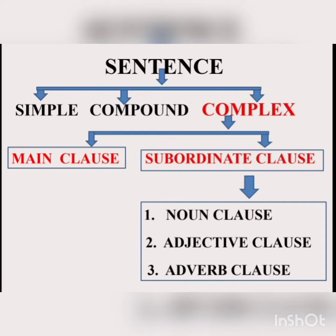A sentence that has two independent clauses is called a compound sentence. For example, 'You must work hard or you will fail.' 'He is rich but he is not generous.' A compound sentence has two simple sentences which are separated by a conjunction.